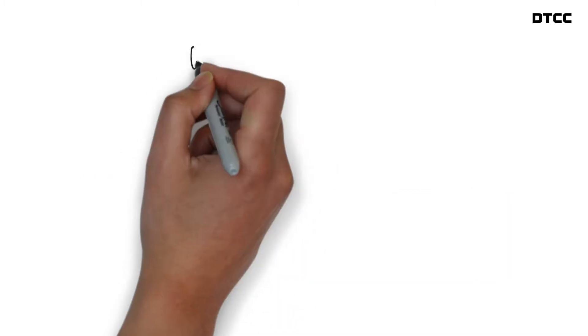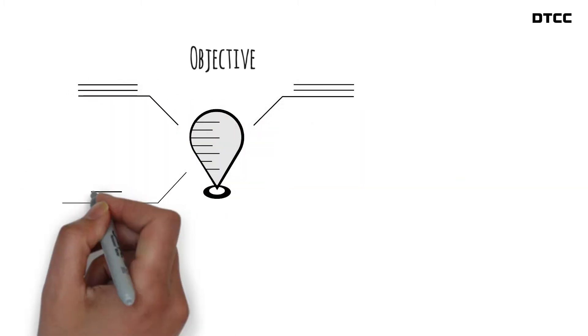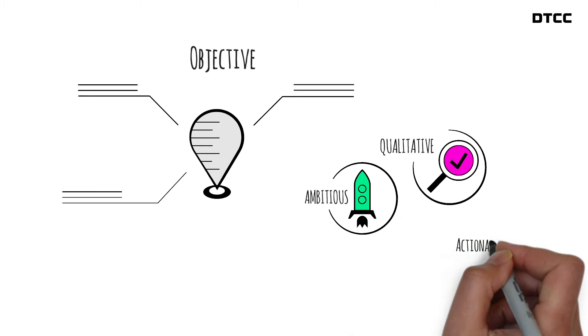Let's take a look. The objectives in OKRs are descriptions of what we want to achieve. They're qualitative, ambitious and actionable.